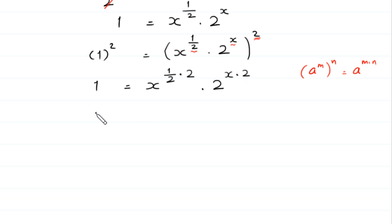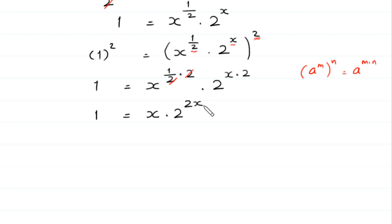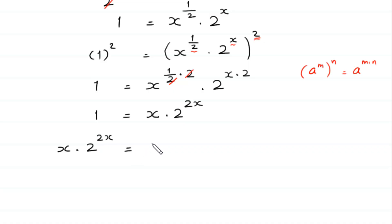So 1 equals x to the power (1/2 times 2) times 2 to the power (x times 2). The 2 in the exponent 1/2 cancels with the 2, leaving x times 2 to the power 2x. We rearrange so that x times 2 to the power 2x is equal to 1.